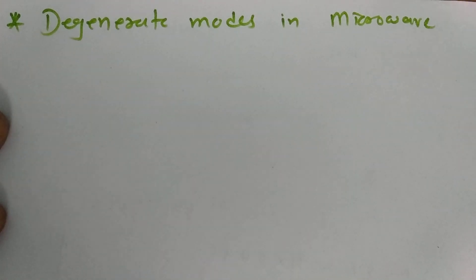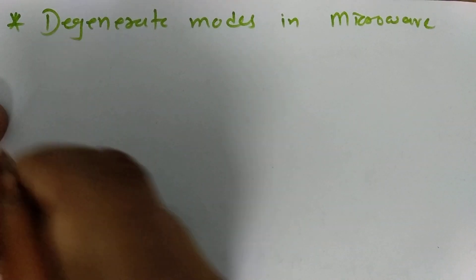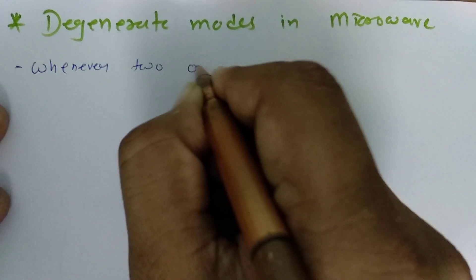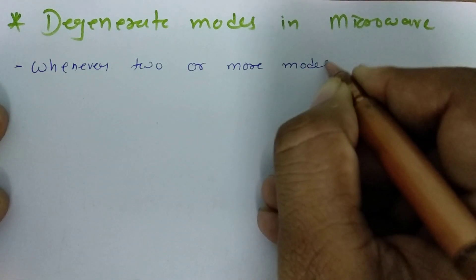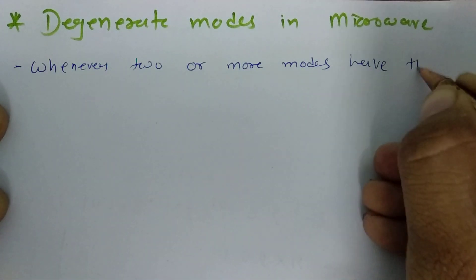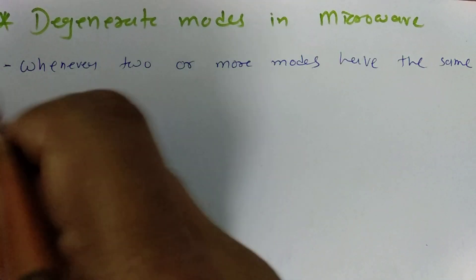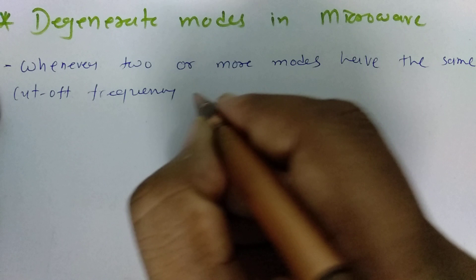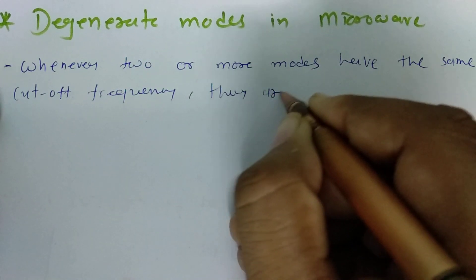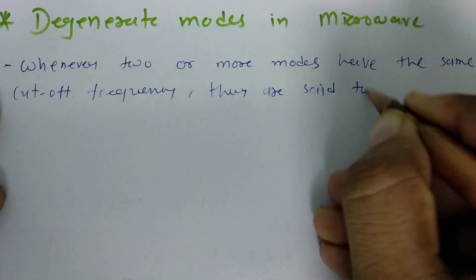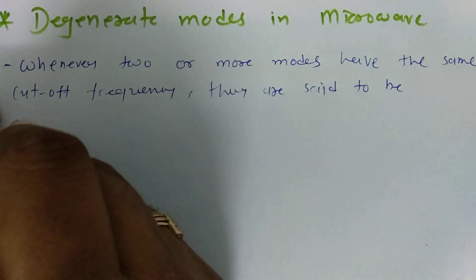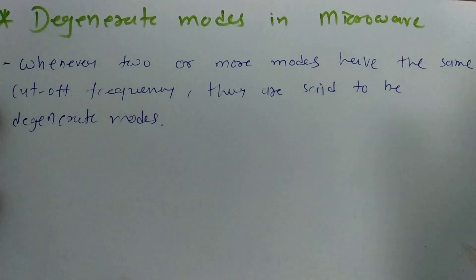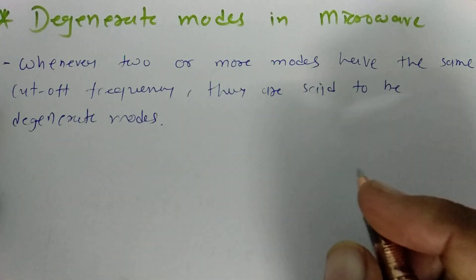Let us write the definition first. Degenerate modes are those having the same frequency. When two or more modes have the same cutoff frequency, they are said to be degenerate modes.